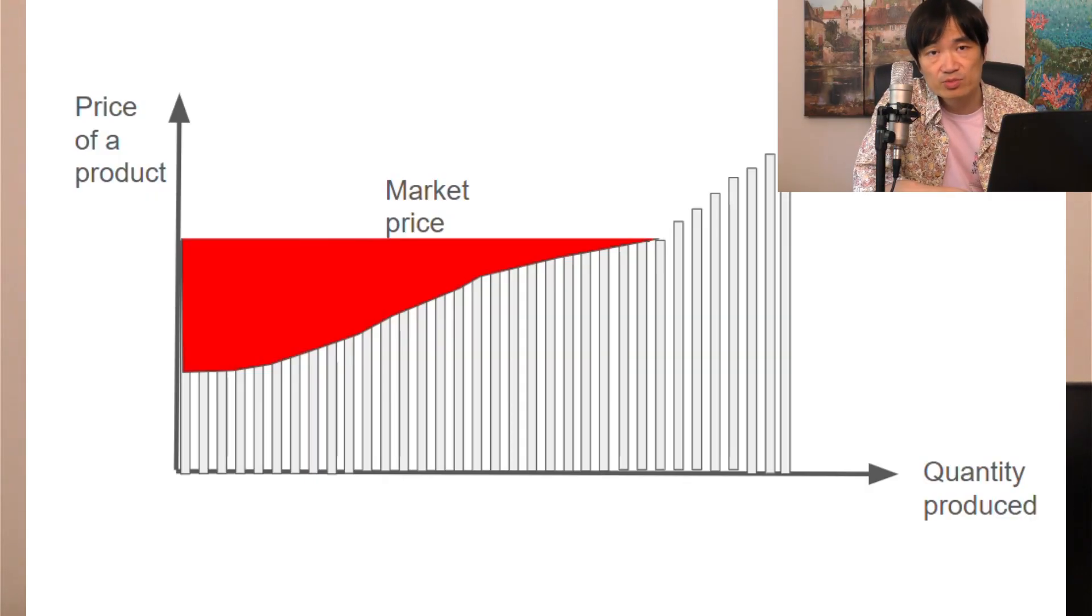So when we have a lot of producers and a large quantity of the product, the area of this shape is really the producer surplus.